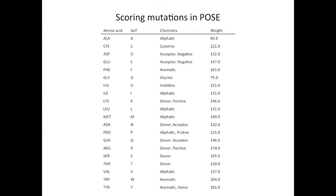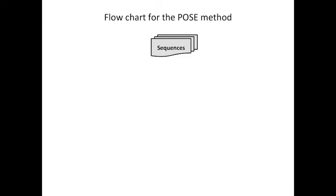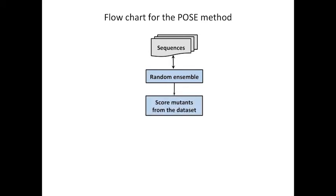We also consider the amino acid chemistry conservation and the molecular weight. The POSE algorithm begins with an initial sequence pool — here it's those 547 CFTR orthologues and paralogues. It takes a random ensemble of those sequences, and then using those sequences and the score function, it scores a set of CFTR mutations.